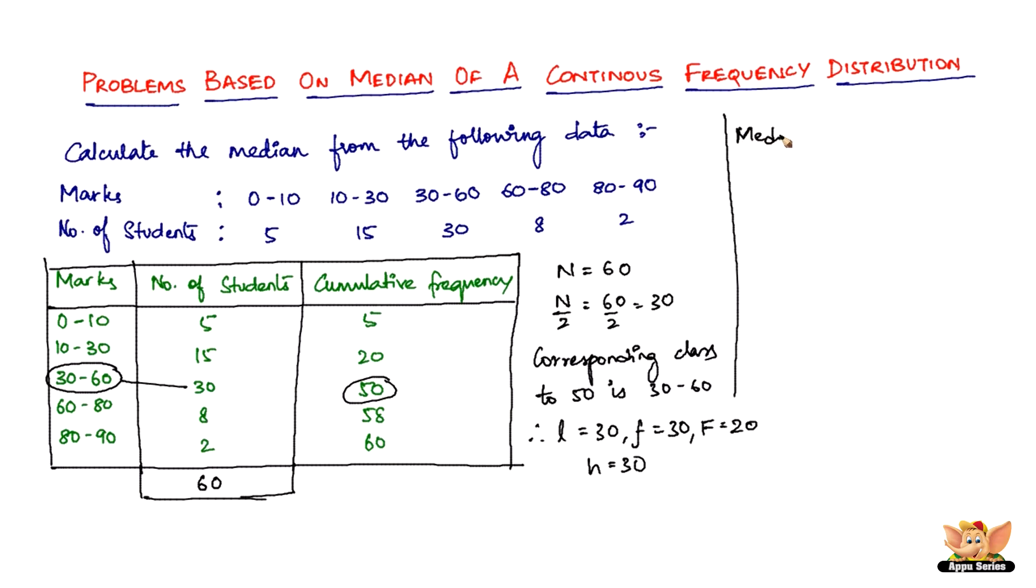Median is given by median equals L plus n divided by 2 minus F divided by small f times h. So we've got L equals 30. So we've got n is 60. So 60 by 2 minus F is given by 20 divided by the small f, which is 30 times h, which is 30.